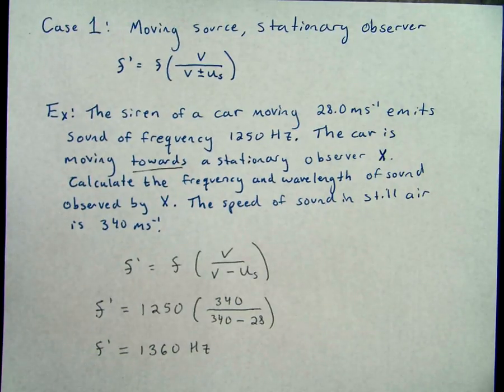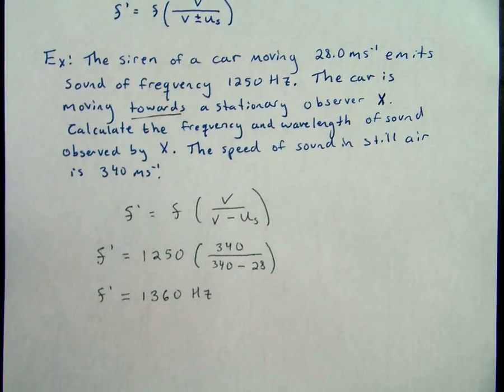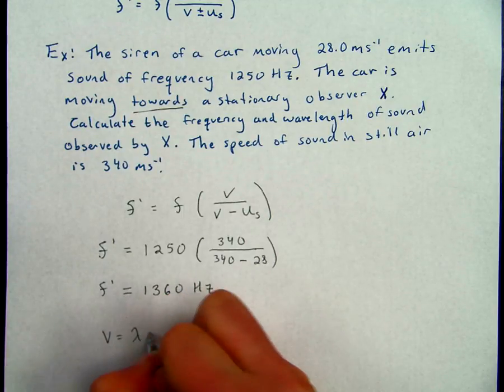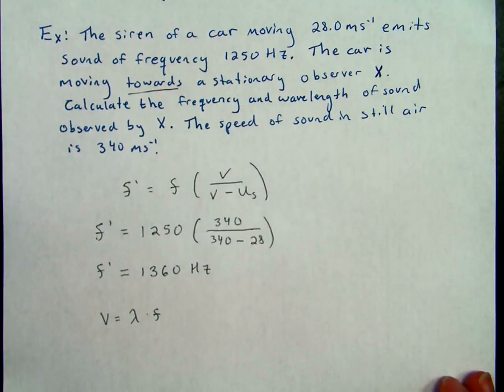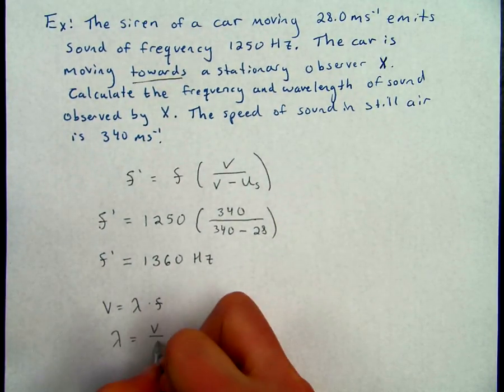The next part of this question is to calculate the wavelength of the sound. We're going to calculate wavelength just as we have before using our wave equation. So wavelength is just velocity divided by our frequency.